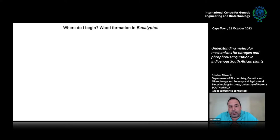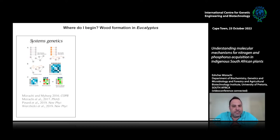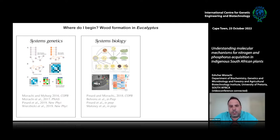As Laura mentioned, my background for the last many years has been in wood formation in eucalyptus. My main approach was actually using systems genetics, where we use genetic perturbation of systems — in this case, a eucalyptus tree and wood formation — to reconstruct and reverse engineer complex biological processes controlled by many genes. Systems genetics and conventional systems biology, where we use model organisms as well as different kinds of trees to perturb them.